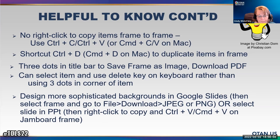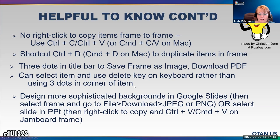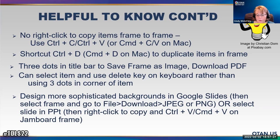You can't right-click to copy items frame to frame, but if you use the Control or Command keys on your keyboard that is possible. I like to use the shortcut Control+D to duplicate items in one frame — we'll practice that. The three dots in the title bar is where you'll do some image saving or download the whole Jamboard as a PDF. You can also select items and just use the Delete key on your keyboard. You can make more sophisticated backgrounds in Google Slides or in PowerPoint.